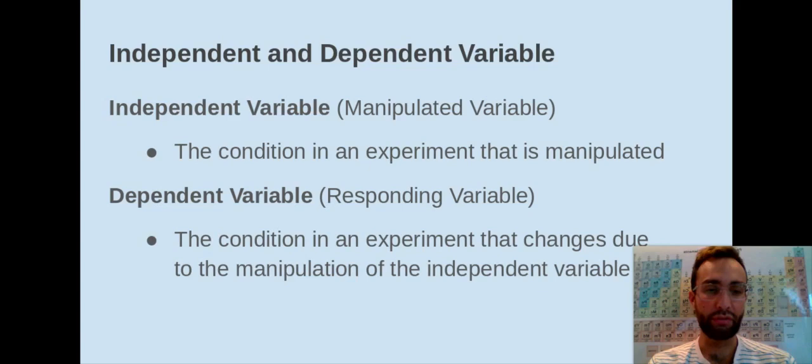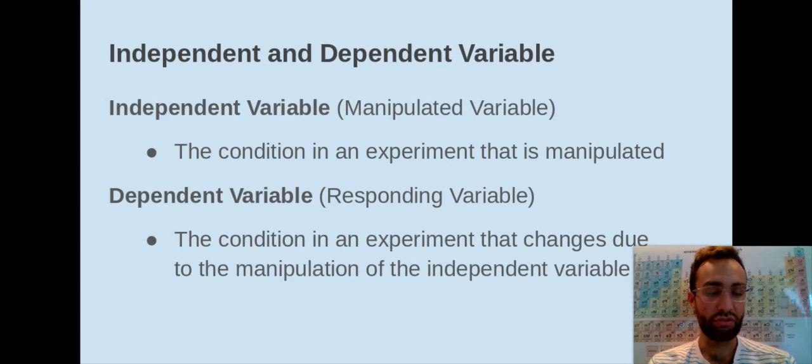In terms of the dependent variable, that's going to be a result of the amount of water. So each day I'm going to measure the height of the plant. So the height of the plant each day is going to be your dependent variable. It's changing as a result of the amount of water.